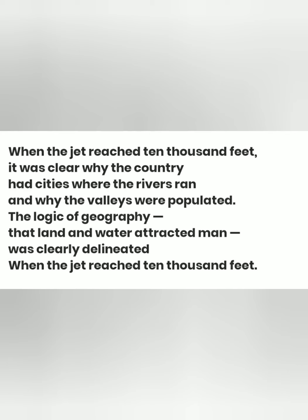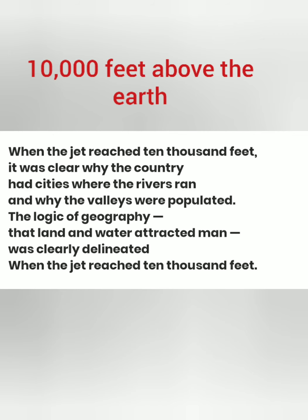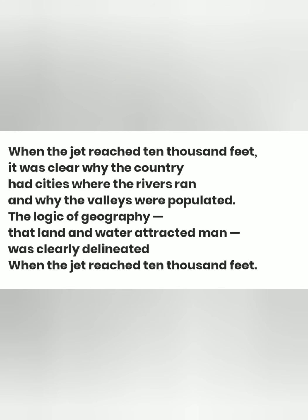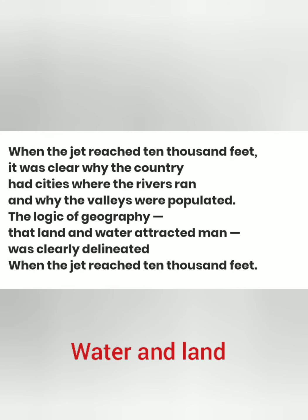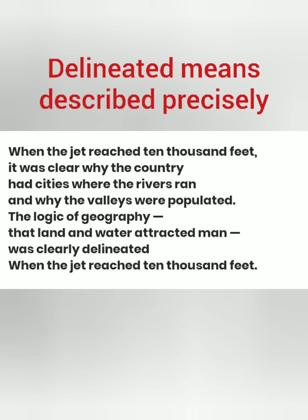The poet is observing the earth through a jet which is 10,000 feet above. When we watch the earth from 10,000 feet, we see rivers and valleys everywhere. This is the logic — people live where they get proper water and land. Here, 'delineated' means described shortly and precisely.